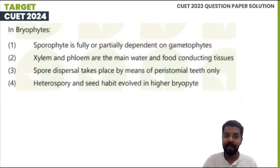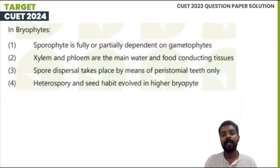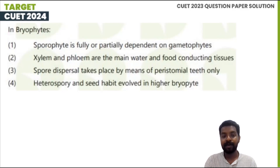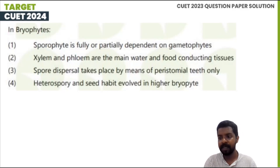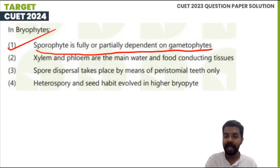In bryophyte, the sporophyte is fully or partially dependent on the gametophyte. Xylem and phloem are the main water and food conducting tissues. Spore dispersal takes place by means of various stomatal teeth only. Heterospory and seed habit evolved in higher bryophytes. Option 1 is the correct answer.